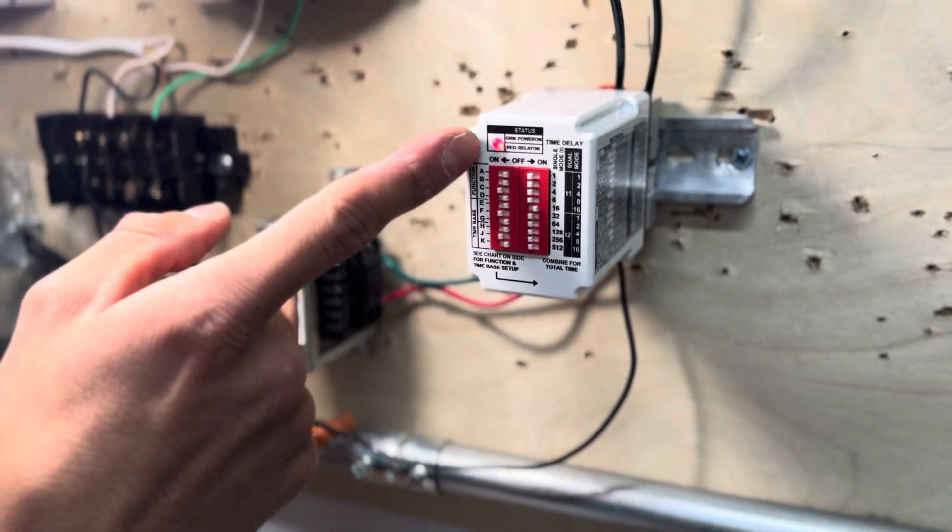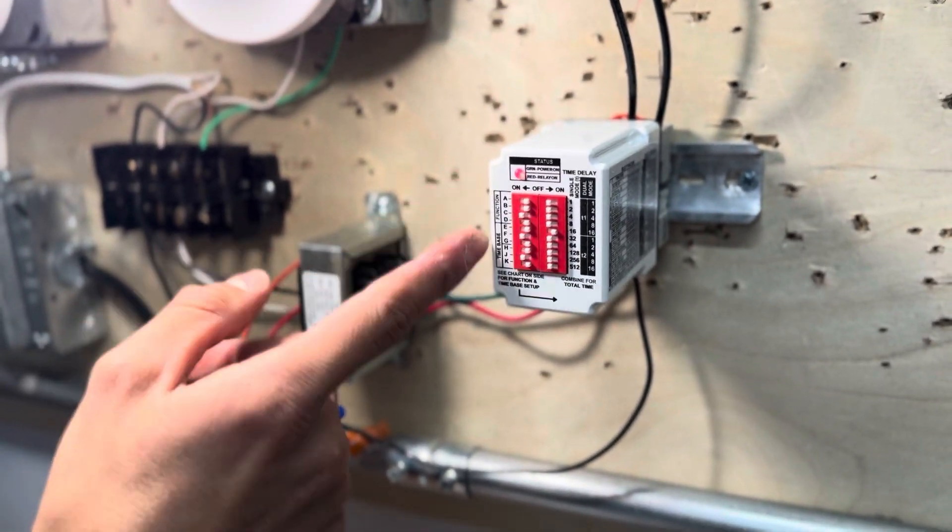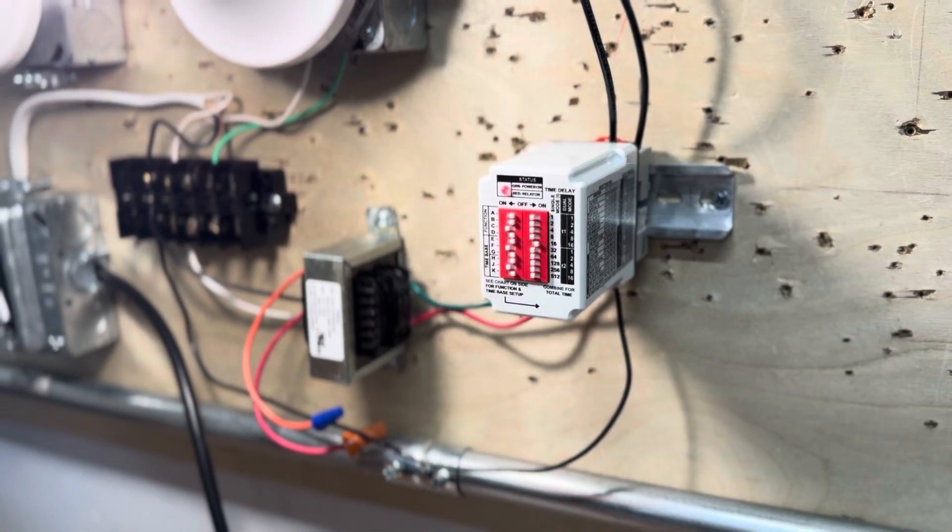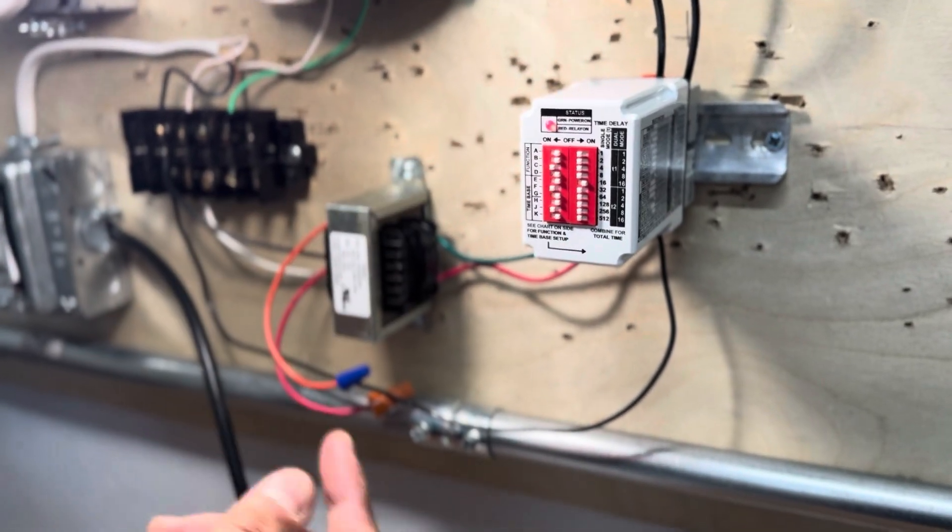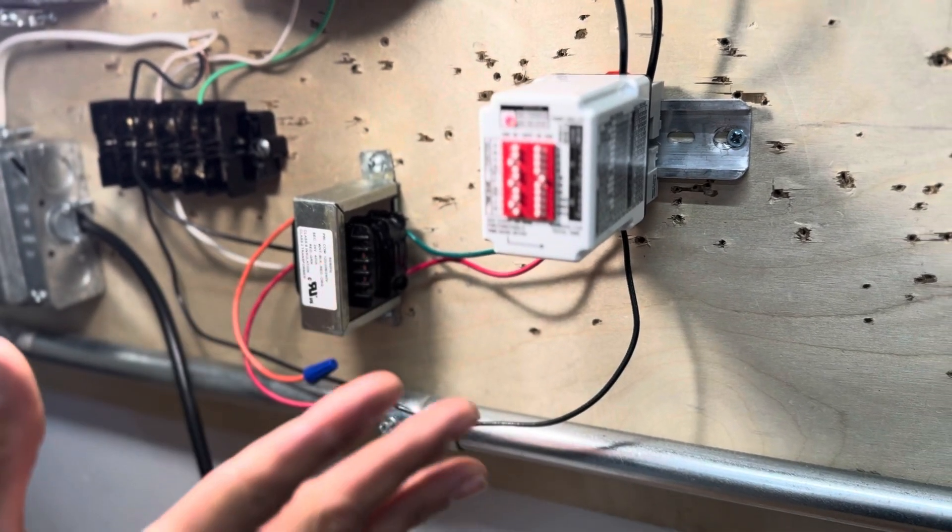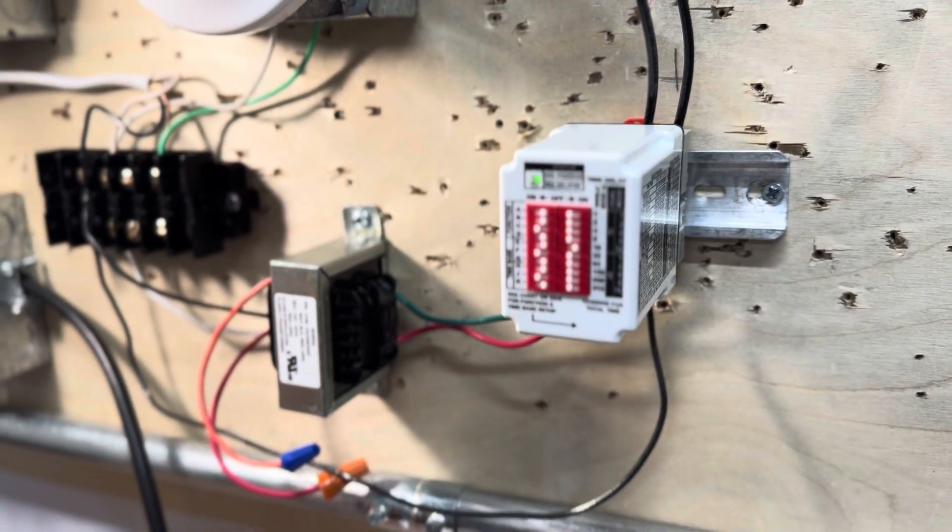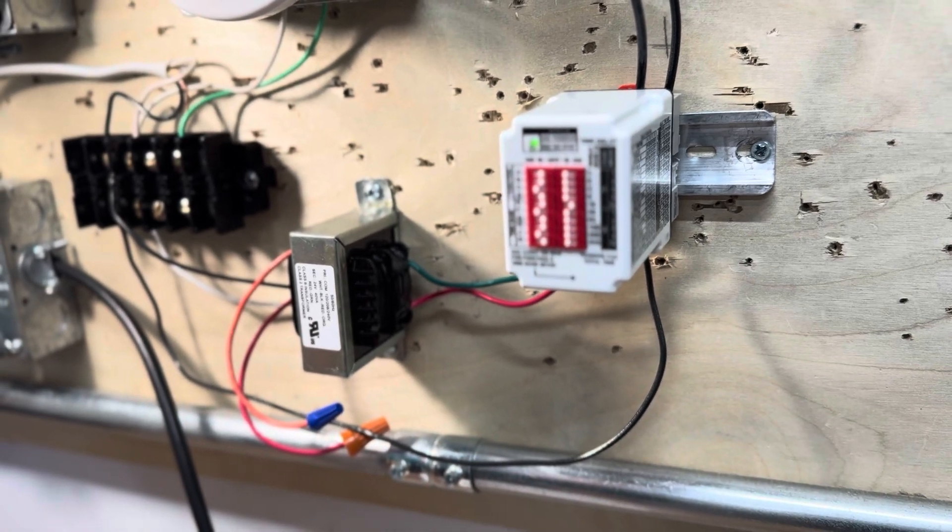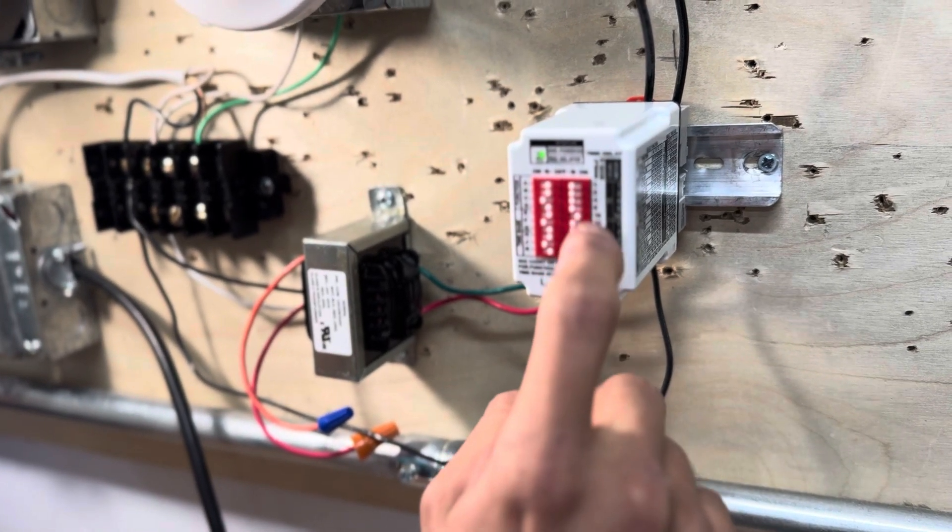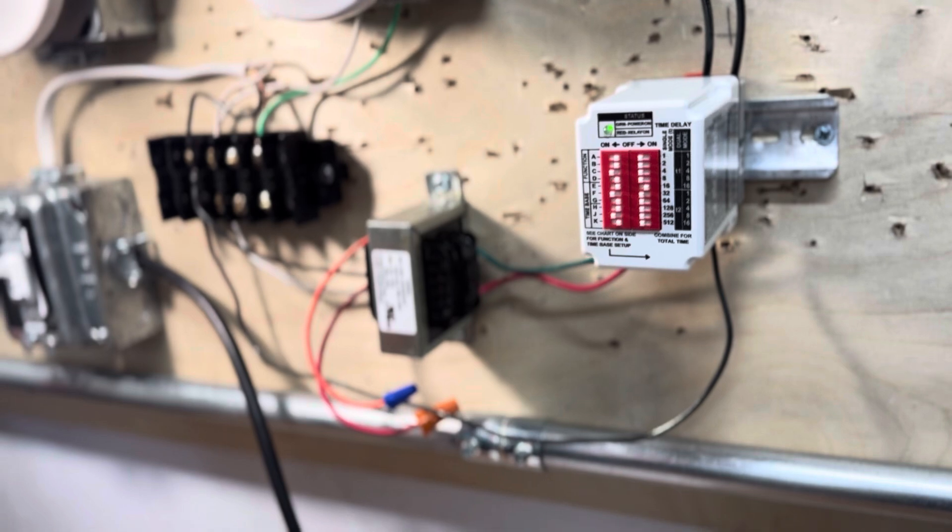So now this light here indicates the status of the solid state relay. It will turn on and off when the system alternates. So now you have a green light meaning that your normally closed became normally open. And again 16 seconds is the time interval or the time delay.